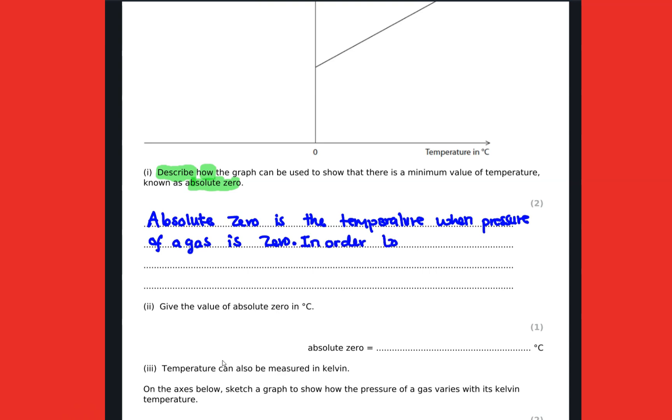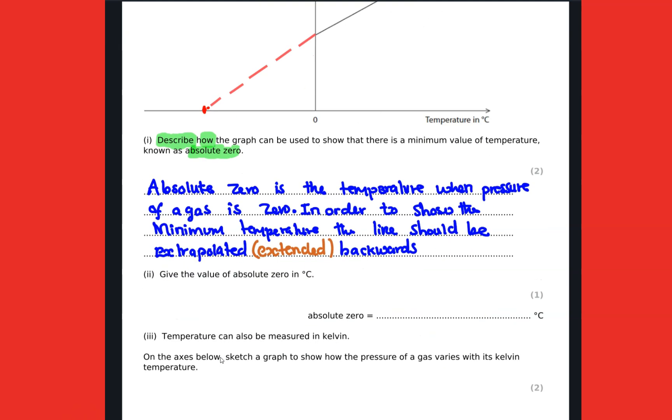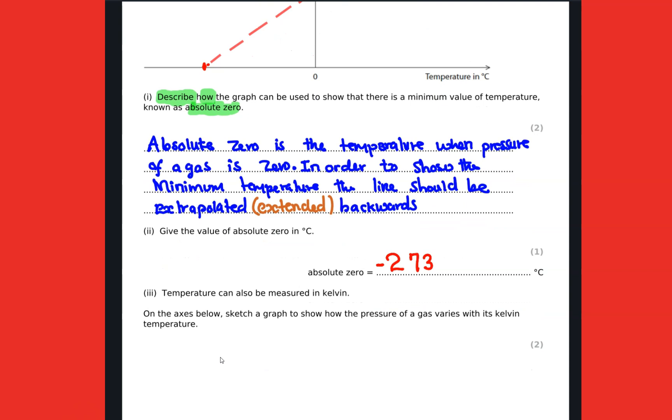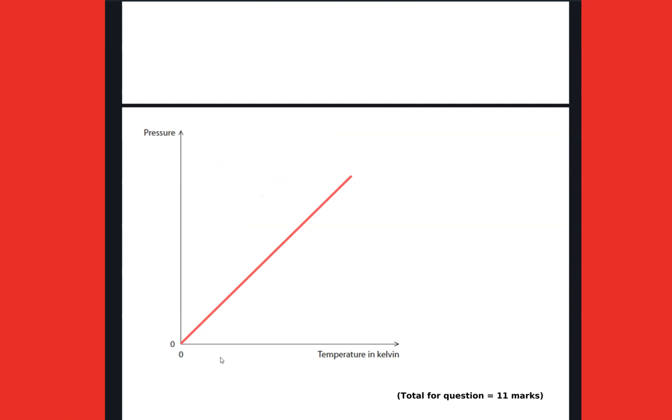So absolute zero is the temperature when the pressure of a gas is zero. At that given point, that gas has zero kinetic energy. So in order to show this, we need to extrapolate the line backwards so that it can be able to cut the x-axis. So that point, this point, is the absolute zero, which is usually negative 273 degree celsius. If you plot a graph of pressure against temperature in kelvin, it's a straight line that runs from the origin, meaning pressure and temperature in kelvin are directly proportional.